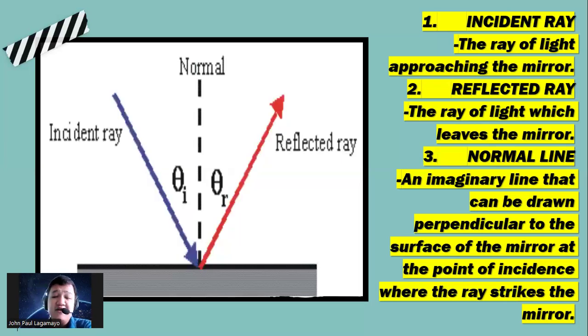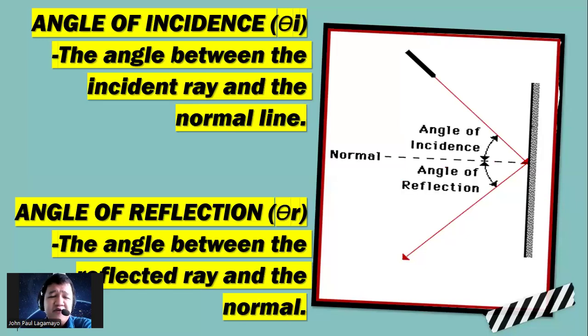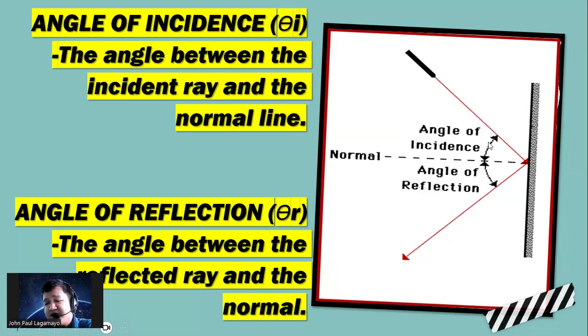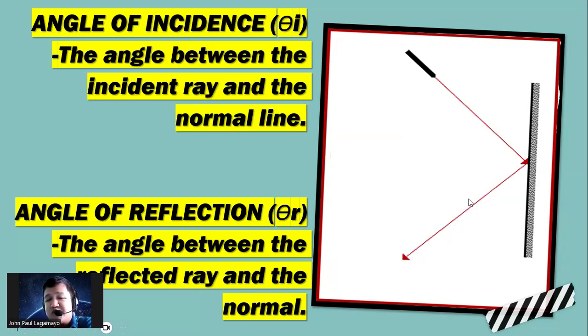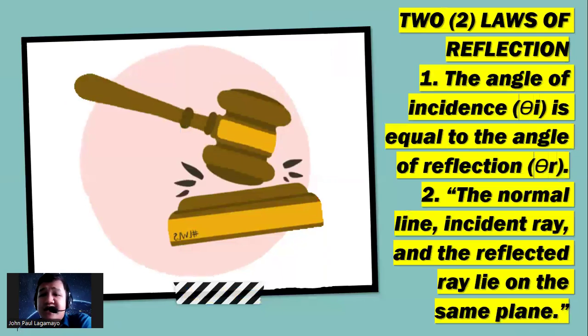These are very important in order for us to move on to the concept of angle of incidence and then the angle of reflection. Once you speak about the angle of incidence, it's between the incident ray and the normal line. We have here the incident ray and the normal line, so the angle in between them. And the angle of reflection is between the normal line and the reflected ray.